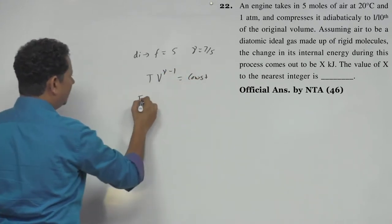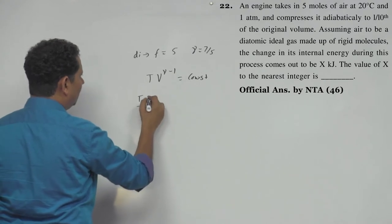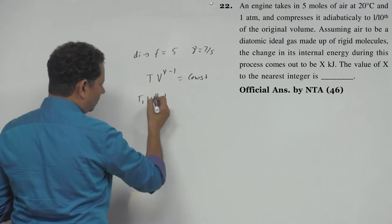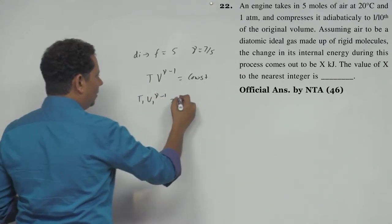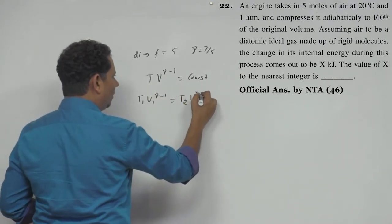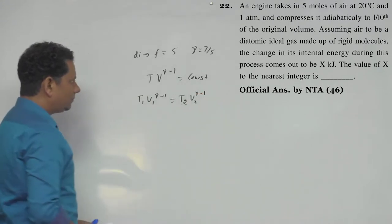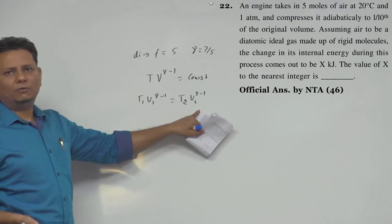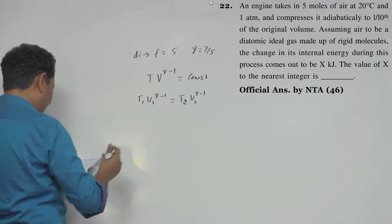For an adiabatic process, T1V1^(gamma-1) = T2V2^(gamma-1). The initial volume is V, the final volume is V/10, and the temperature is given, so we can use this equation.